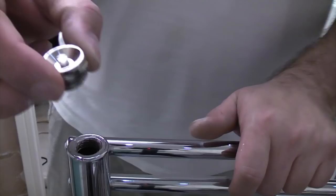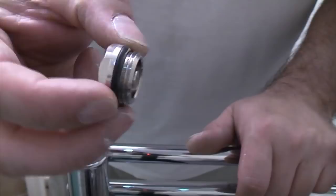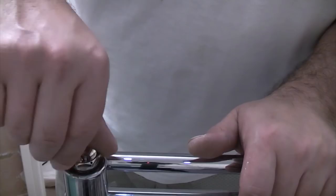So now at this side we'll fit the actual bleed valve itself and again it's got an o-ring on it so we can just screw it straight in. And again we'll just tighten that up using the spanner.